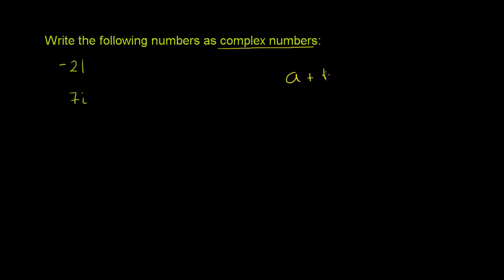a plus b i. Where a is real and b is real, this is a complex number. This part right over here is the real part. That is the real part of the number. And this part right over here is imaginary.